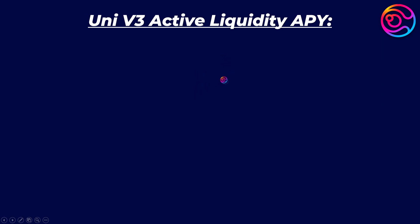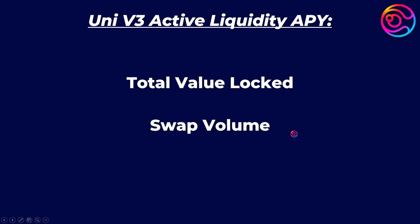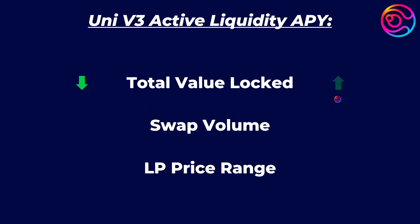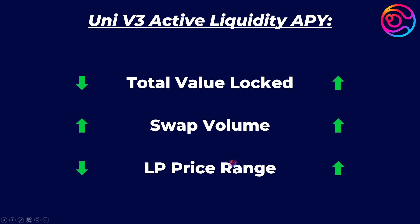The APY of a Uniswap V3 Dyson vault depends on three factors: TVL, swap volume, and the price range of the LP. A lower TVL will increase the APY because the same number of swap fees will be spread out and distributed across less capital. Higher swap volume will increase the APY and is the primary driving force of the yield — more swap volume means more swap fees generated, means more yield paid to liquidity providers.